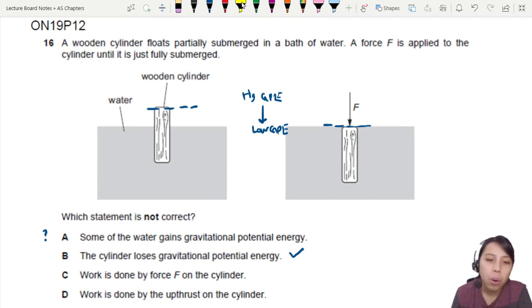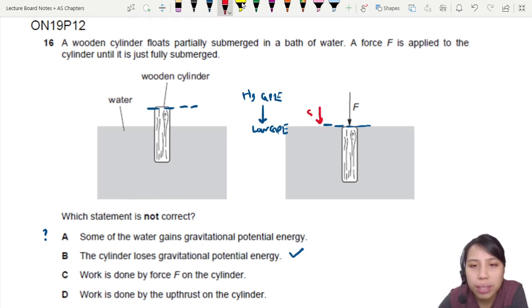Statement C says work is done by force F on the cylinder. What's the displacement? We move down by a certain distance. So is there work done by force F? Yes. Work done by force F is positive because F and S are both in the same direction. I push and it goes down. So yes, work is done.